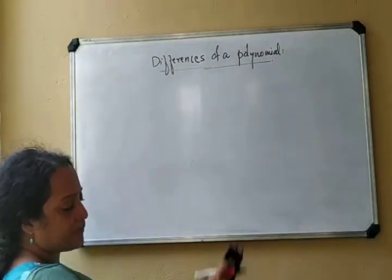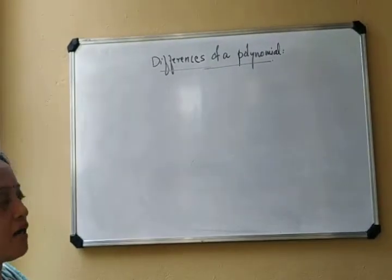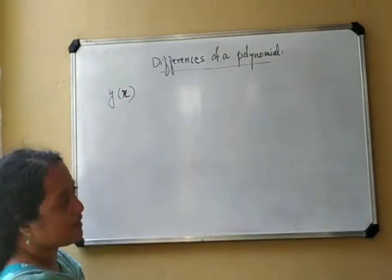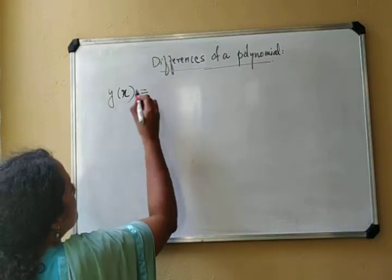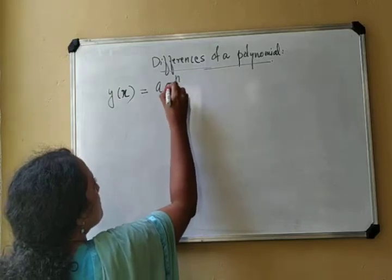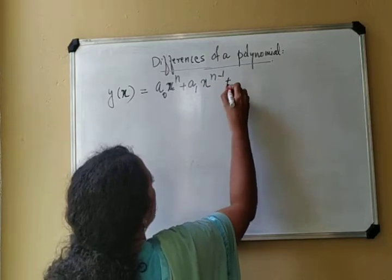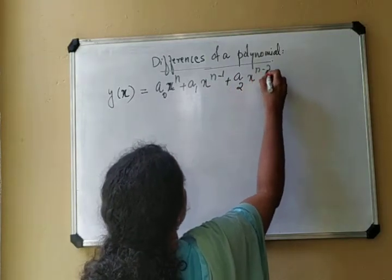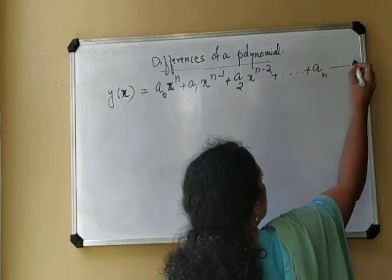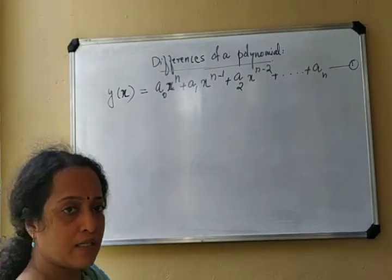For this we consider an nth degree polynomial y(x). It can be written as y(x) = a0·x^n + a1·x^(n-1) + a2·x^(n-2) + ... + an. This may be marked as equation number 1.